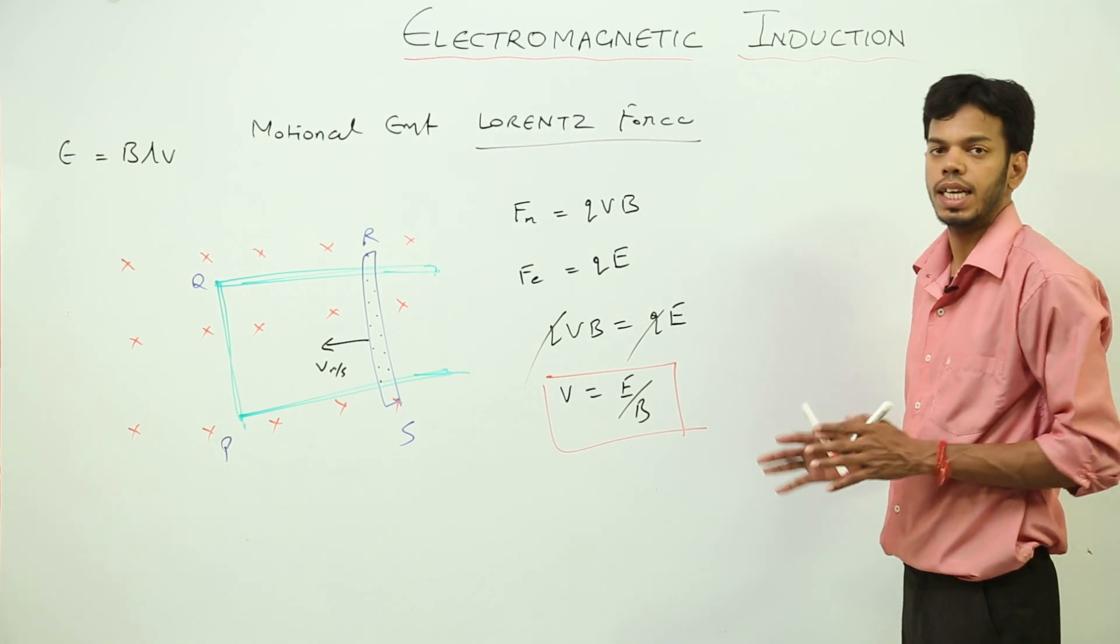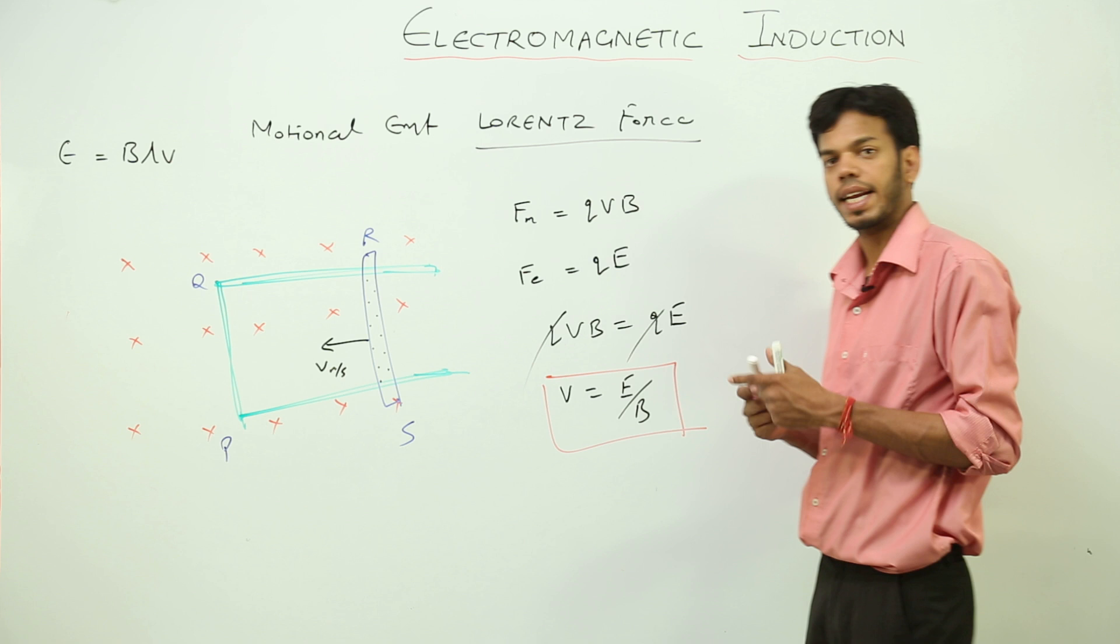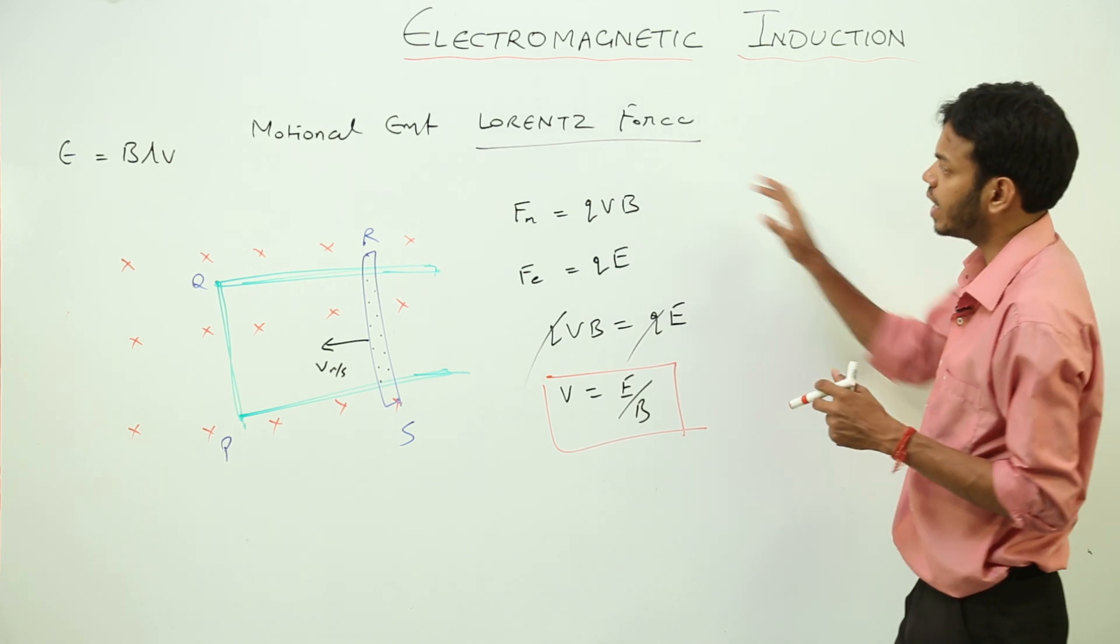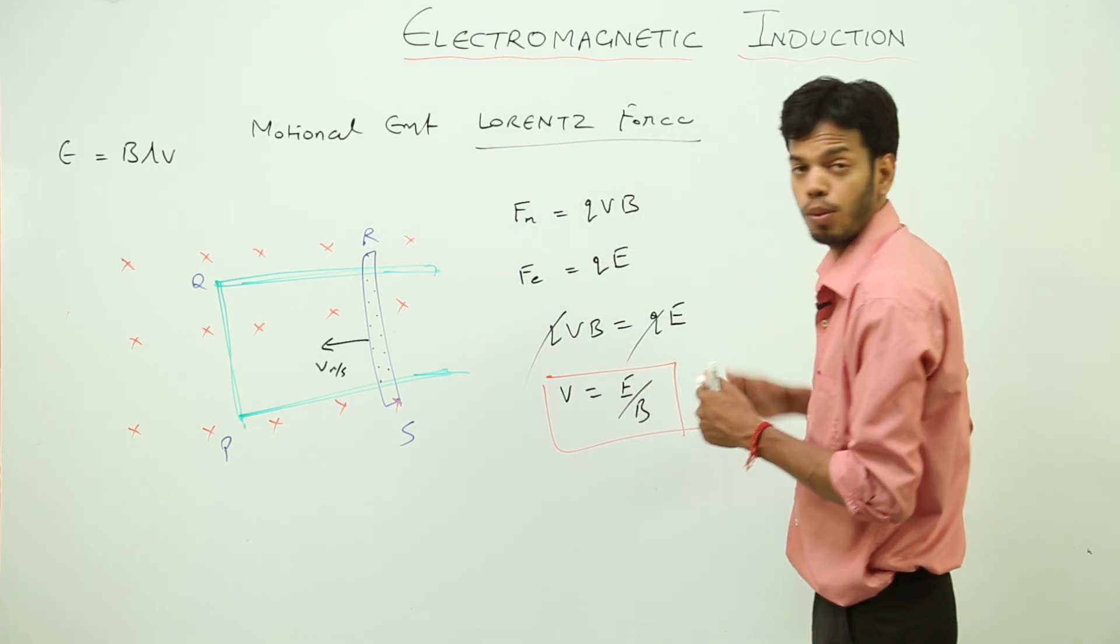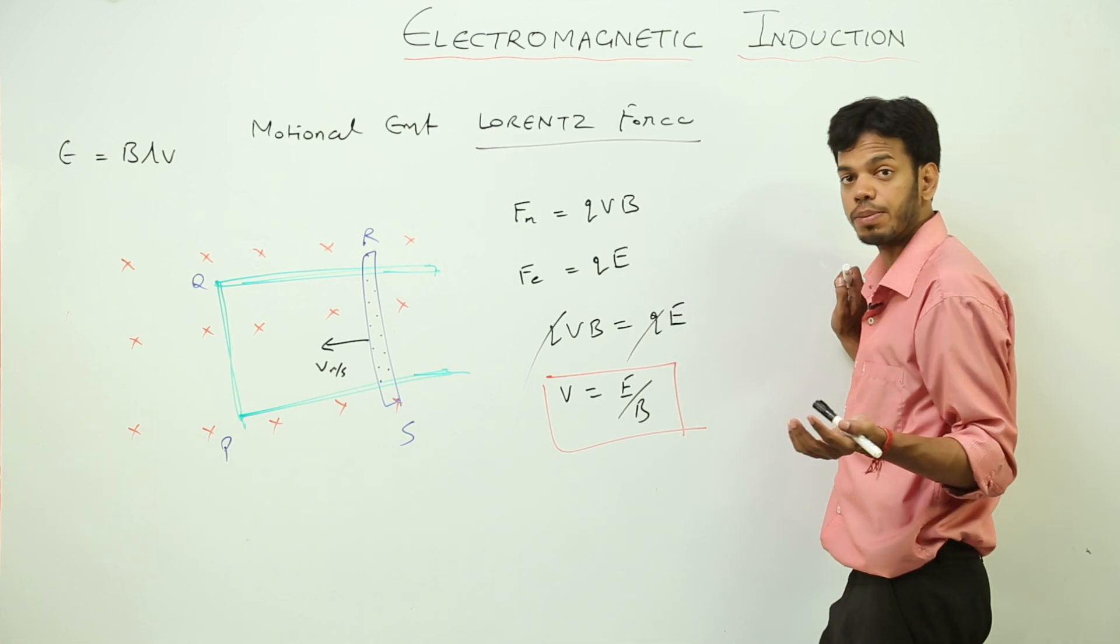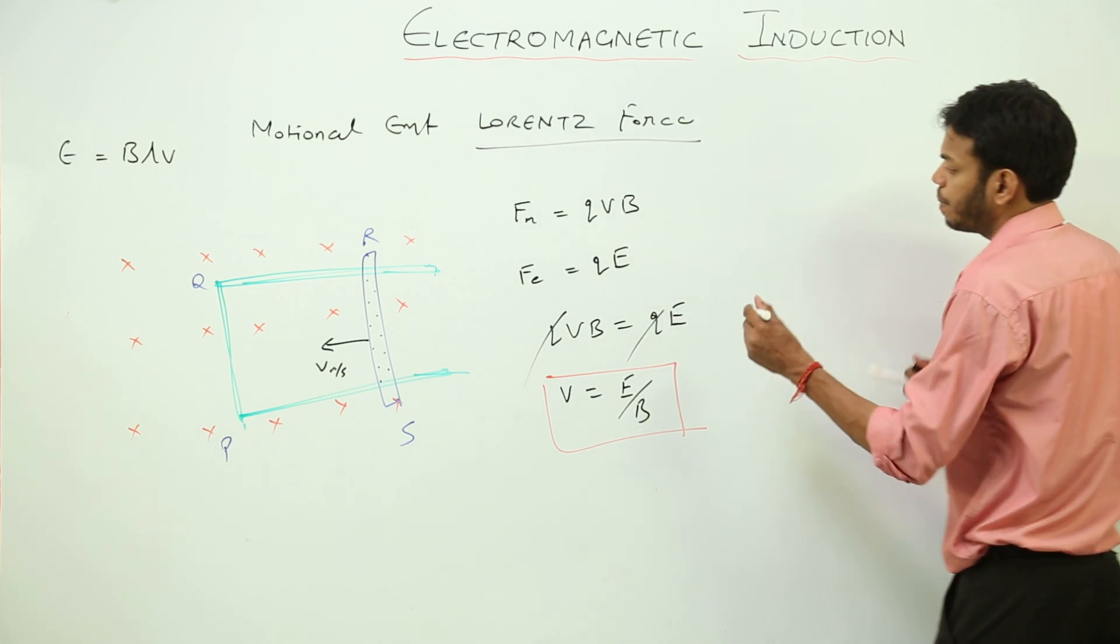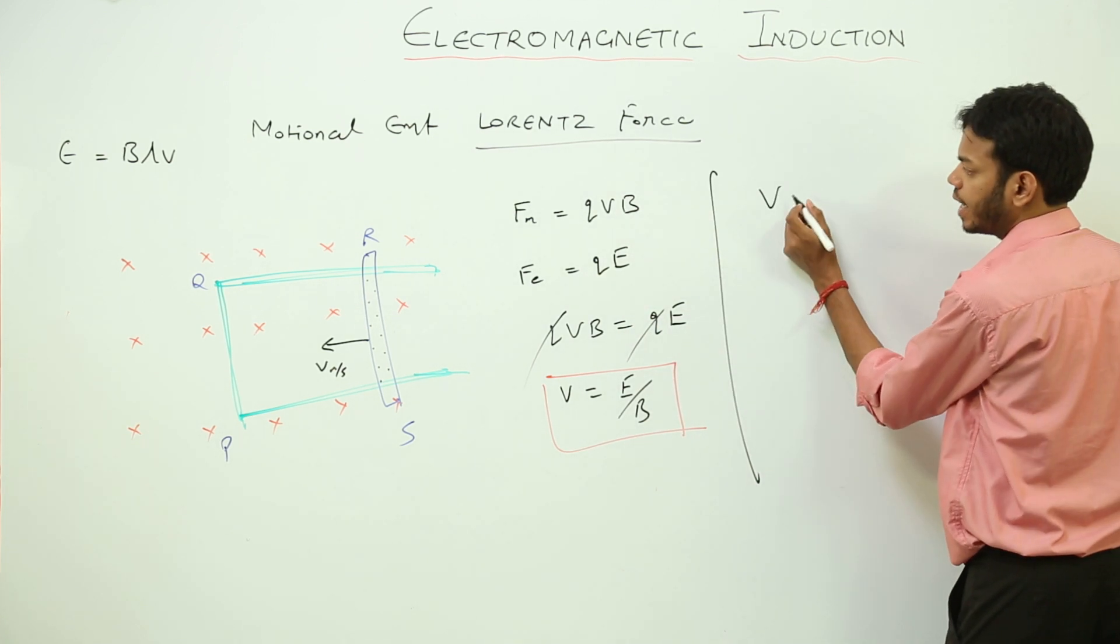The magnetic field B - we'll discuss the magnetic field again, but first of all, this expression was motional EMF from Lorentz force. We have to find the expression for motional EMF. That means the voltage, potential difference.